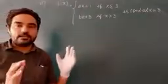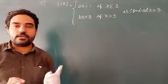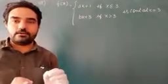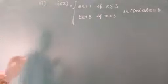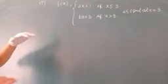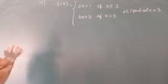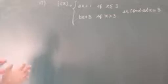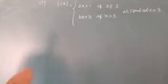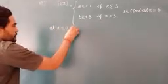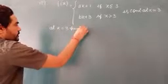Since the function is continuous at x = 3, we need to find the relationship between a and b. The method is: first we have to find the left hand limit at x = 3 and the right hand limit at x = 3.